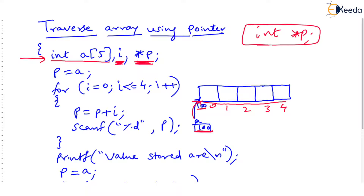This 'p' is an integer pointer, so 'p' can point to any integer — although right now it is not pointing to any integer. Notice the next line: 'p = a'. Both 'p' and 'a' are pointers. Since 'a' points to the begin address of the array, which is 100, 'p' will also become 100 — 'p' points to the begin address. This way I made a substitute pointer 'p', while 'a' stays fixed at 100.